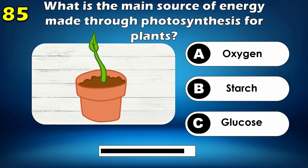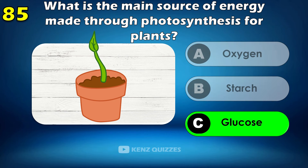What is the main source of energy made through photosynthesis for plants? Glucose.